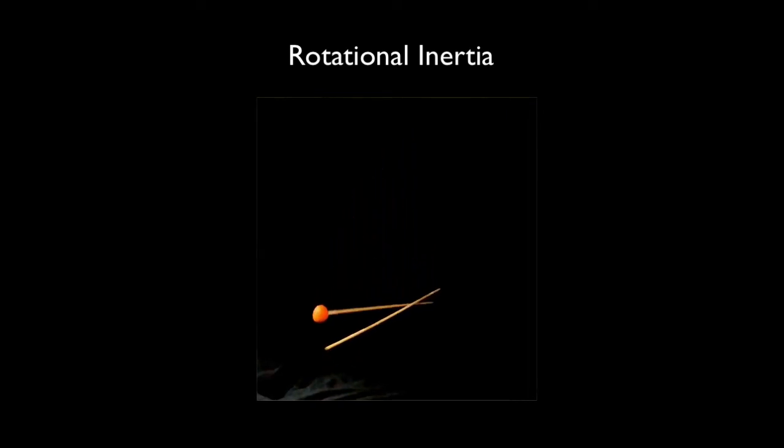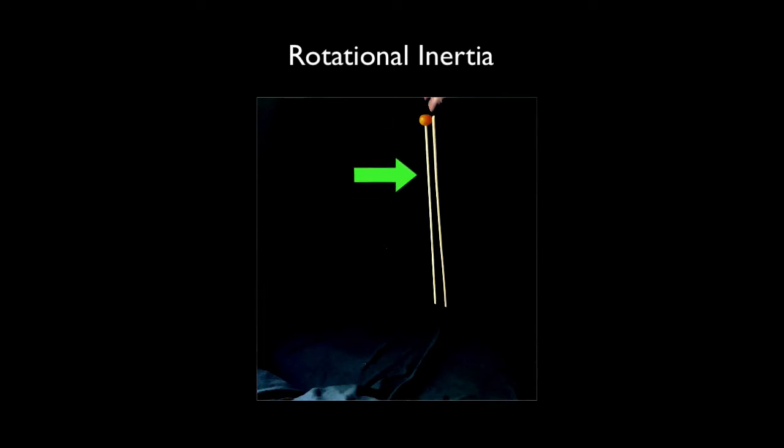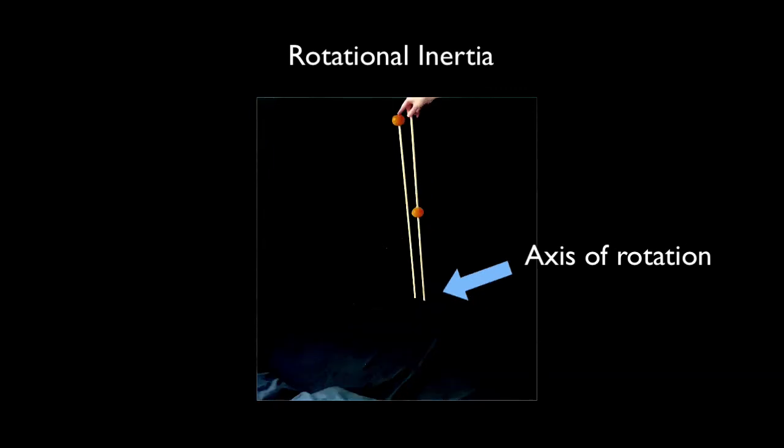However, we find that the distance the mass is located from the axis of rotation is also important. Let's put oranges of equal mass on both sticks, but with one orange toward the middle of the stick. Which will fall slower?